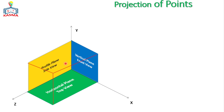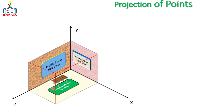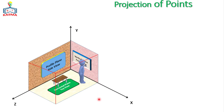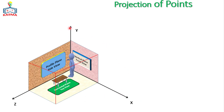To understand it in a simple way, assume this is a room or classroom. A person standing and entering that room will get a vertical plane in front of his face, a profile plane on the left side, and he stands on the horizontal plane. These three planes are perpendicular to each other. The vertical plane uses x and y coordinates, the profile plane uses y and z, and the horizontal plane uses x and z. The vertical plane gives the front view, the horizontal plane gives the top view, and the profile plane gives the side view.